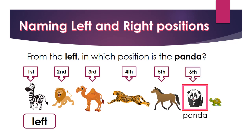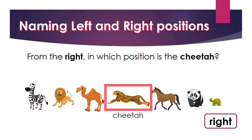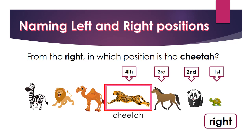Now look at the position of the animals from the left. In which position is the panda? From the left, the panda is first, second, third, fourth, fifth, sixth — the panda is sixth from the left. Now from the right, in which position is the cheetah? From the right, the cheetah is first, second, third, fourth — the cheetah is fourth from the right.